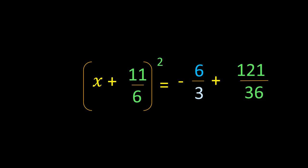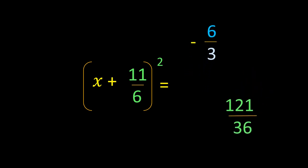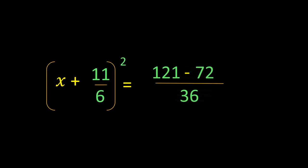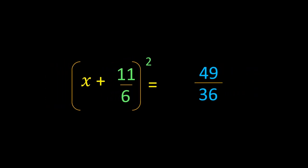On the RHS, we are left with -6/3 plus (11/6)². When (11/6)² is simplified, we get 121/36. Next, we simplify 121/36 - 6/3. Taking 36 as the LCM, the denominator becomes 36, and the numerator becomes 121 - 72.